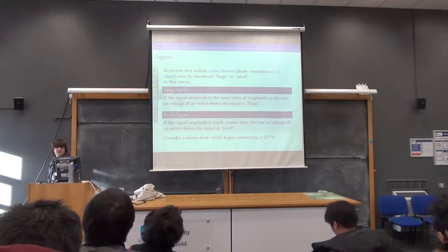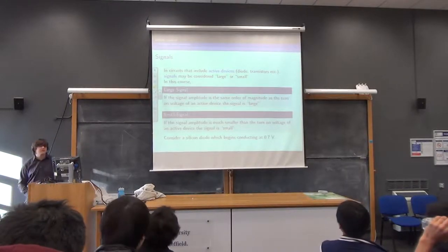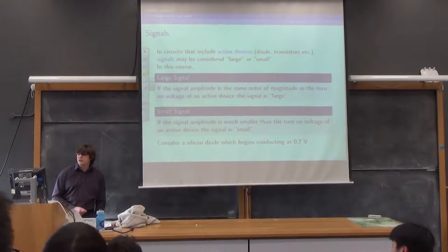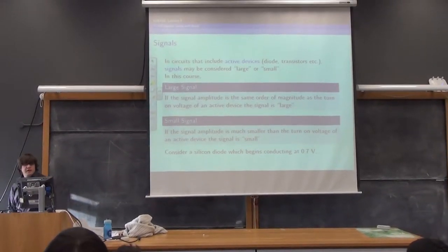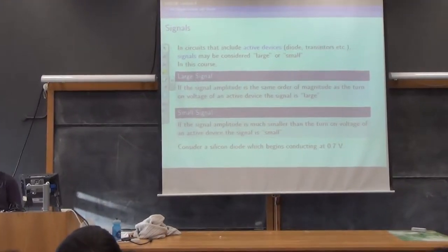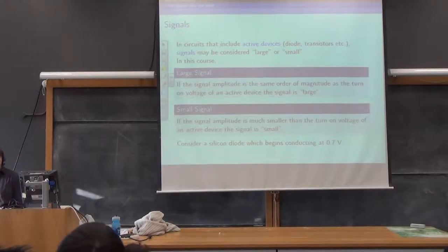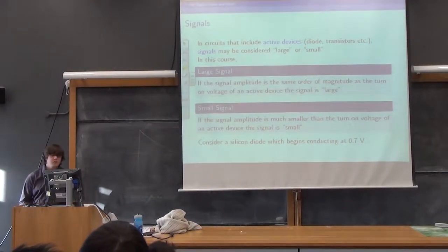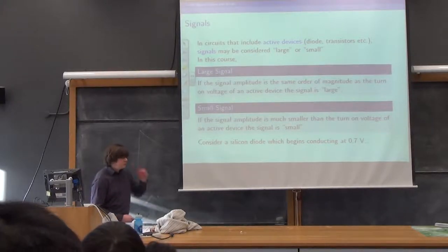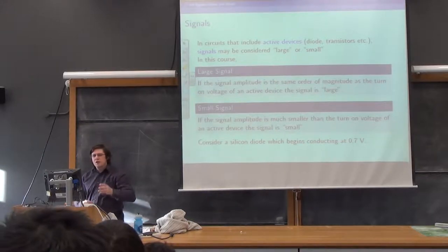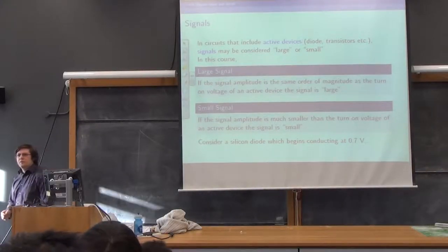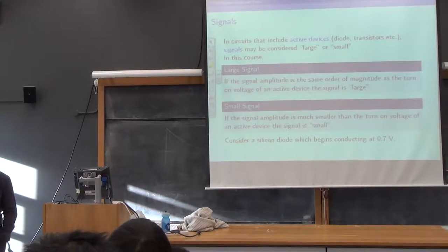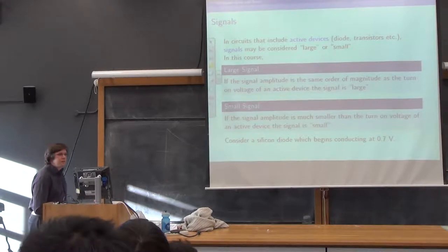A signal definition: in circuits that include active devices — transistors and so forth — a signal may be considered large or small. The signal is large if the signal amplitude (the Y-axis height) is the same order of magnitude — within a power of 10 — of the turn-on voltage of the active device. The signal is small if it's much smaller than the turn-on voltage. For diodes, a large signal would be more than 0.7V, or perhaps 0.5V with some DC offset. A small signal would be a couple of hundred millivolts or less.